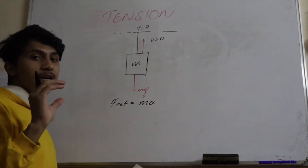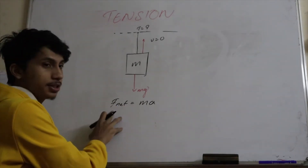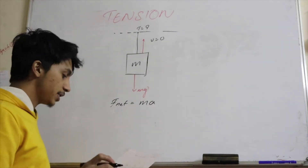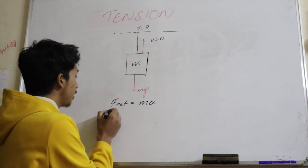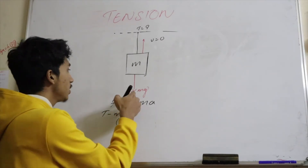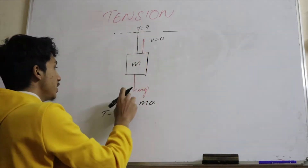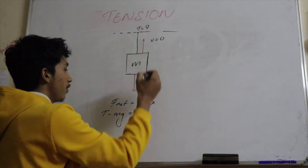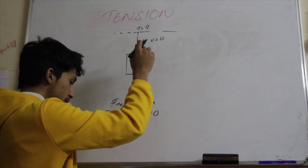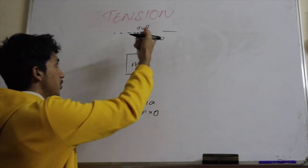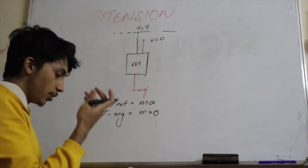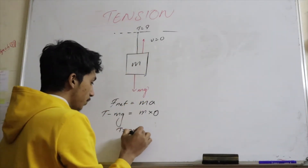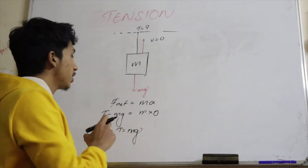Net force is always equal to mass times acceleration. Do not get confused in this condition — F_net always equals mass times acceleration. So tension minus mg is the net force, and here the acceleration is zero. Since velocity is zero, we can say acceleration is zero.